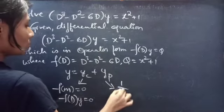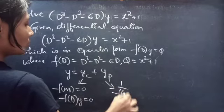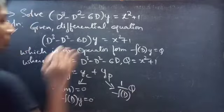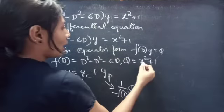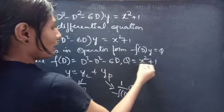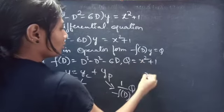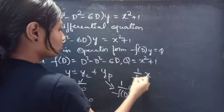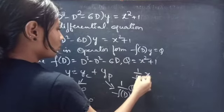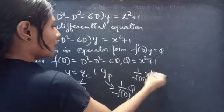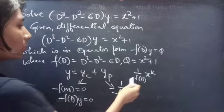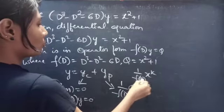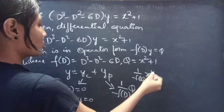We will find yp using (1/f(D)) × Q. In our Q we are having x² + 1, which is of the form x^k. We will find yp using (1/f(D)) × x^k. Since we are having x², we will find the derivative till D² of Q, because from D³ onwards you will get values of 0.